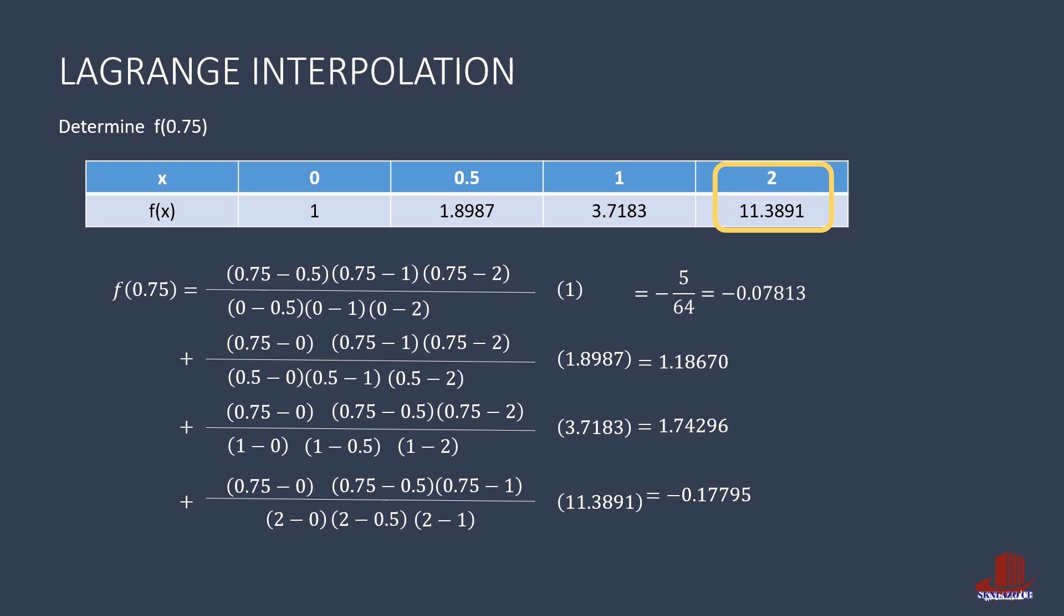Add all of these values to get f of 0.75 as 2.67358. There is a minor discrepancy of the function of 0.75 from the two methods, but it is from the fifth decimal place.